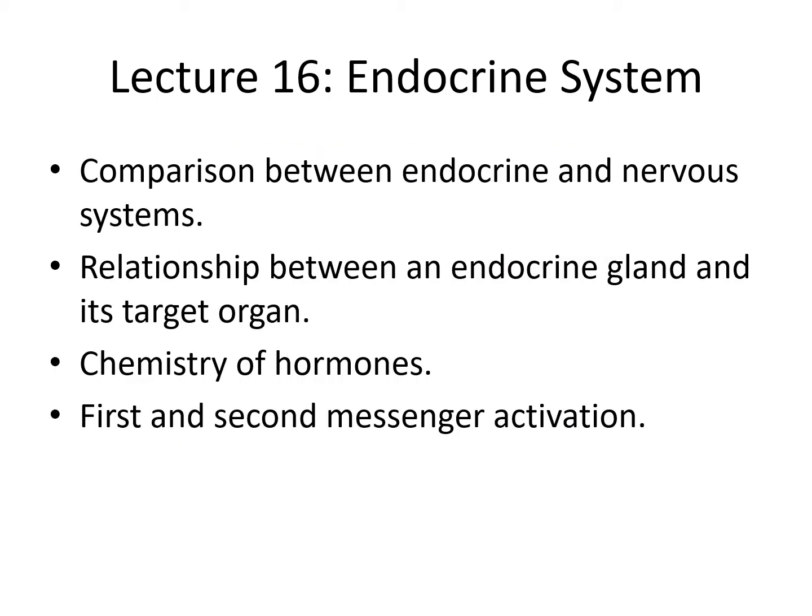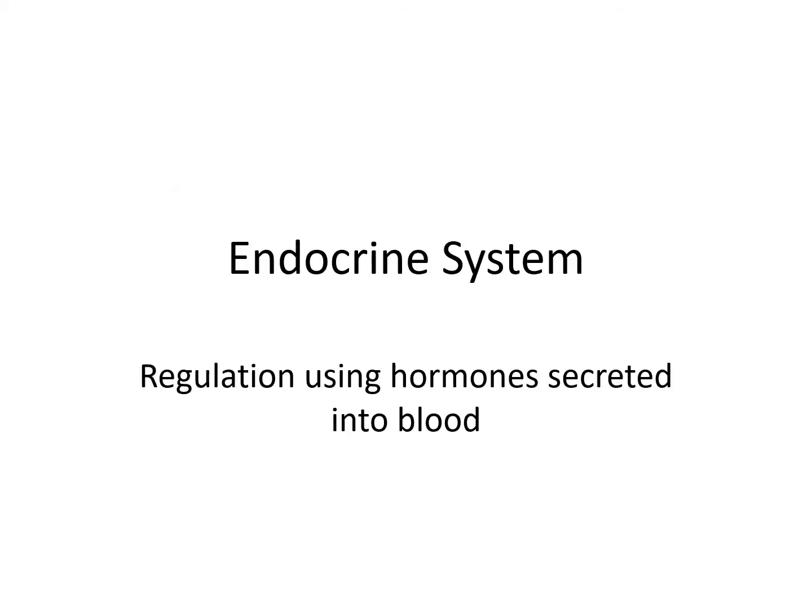First, we'll compare the endocrine and nervous systems and show how the endocrine glands communicate to their target organs. We'll classify the chemistry of hormones and discuss second messenger systems. So let's start with the basics of the endocrine system.